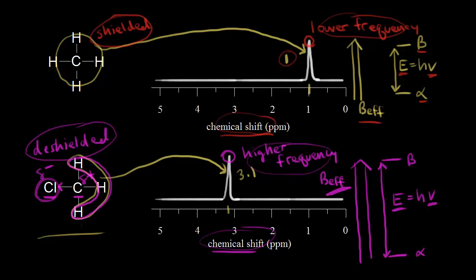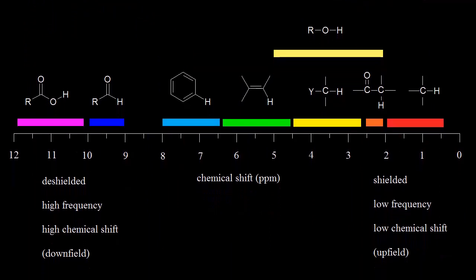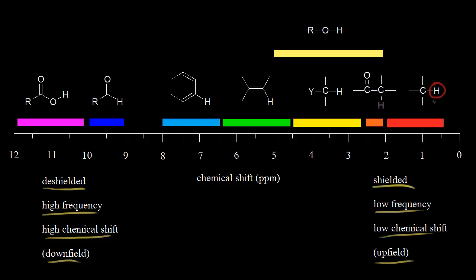Let's apply this to a chart with a bunch of different functional groups and think about the different chemical shifts for protons in different environments. If you deshield a proton, you get a higher frequency signal and therefore a higher chemical shift — this is called downfield. The left side of the NMR spectrum shows more deshielded protons. To the right side are more shielded protons, therefore a lower frequency signal and a lower chemical shift — you could also use the older term upfield. For a proton on a carbon in an alkane-type environment, this is a shielded proton, so we'd expect a low frequency signal, somewhere in the range of 0.5 to 2 parts per million.